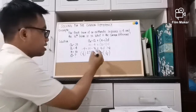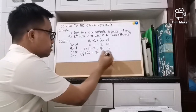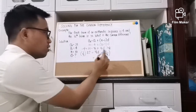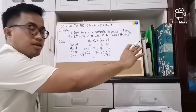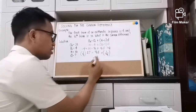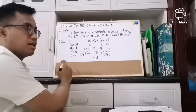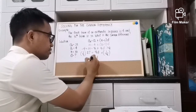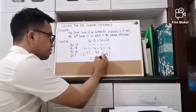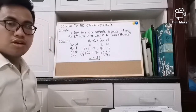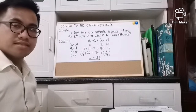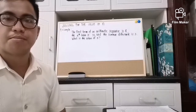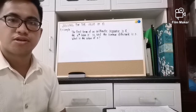We multiply 1 over 9 on both sides and cancel out 9. What is left on the right side is d, and on the left side we have 3. So the common difference is 3.